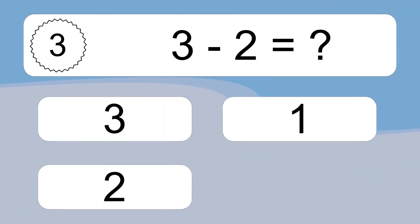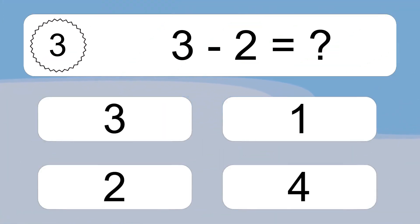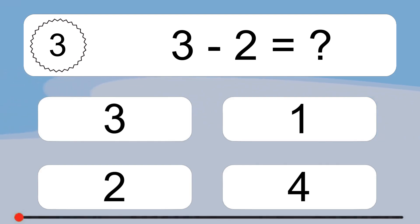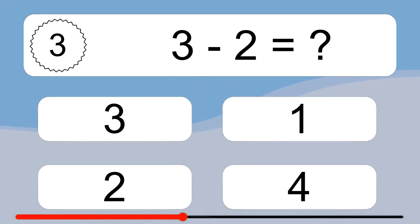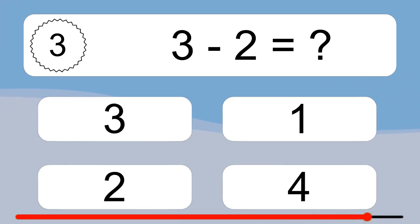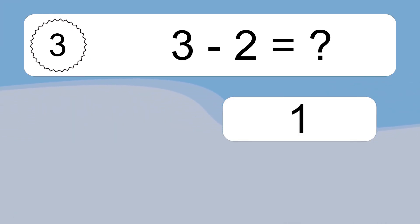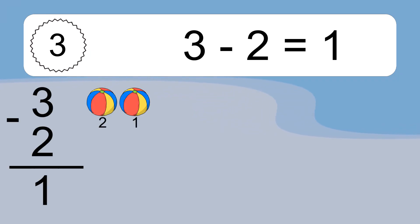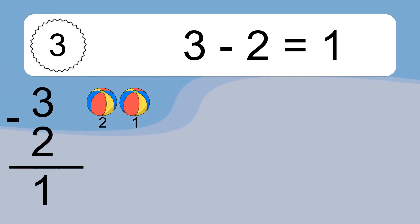3 minus 2 equals what? 3 minus 2 equals 1. Let's count it: 2, 1.